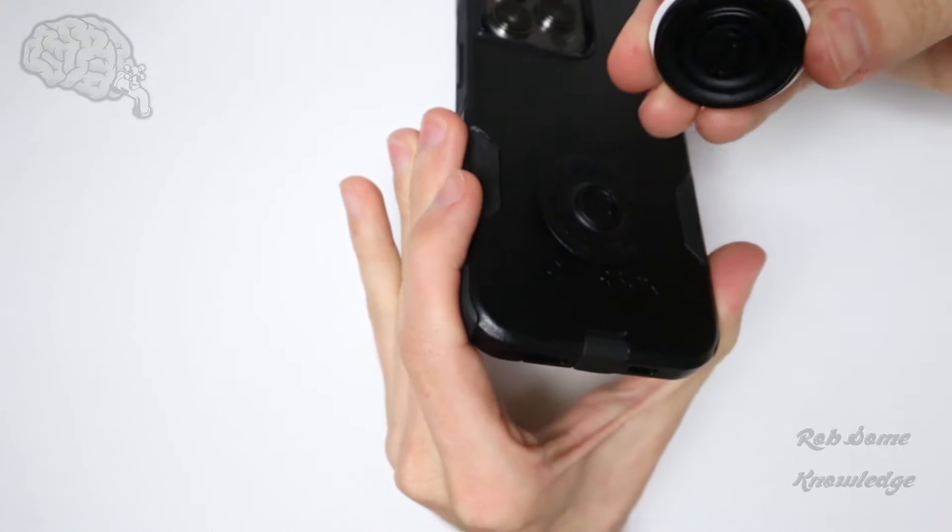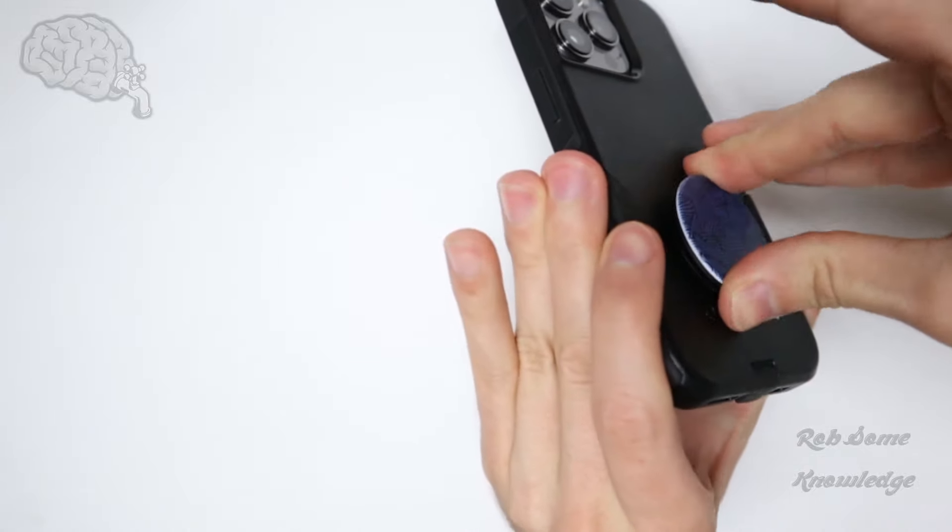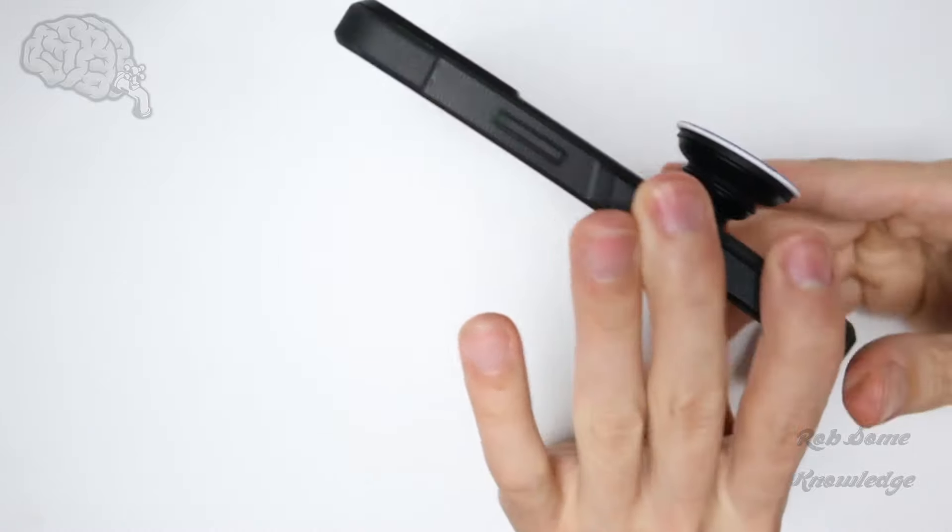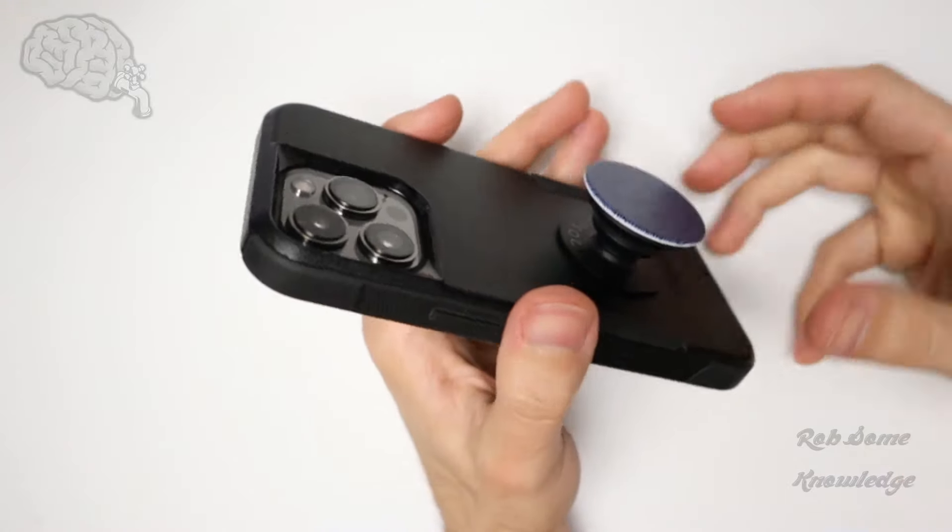You're going to line it up in the little socket. You're going to press down and turn it 90 degrees again. And then now you're locked back in place. And you can turn it 90 degrees clockwise or counterclockwise. It doesn't matter.